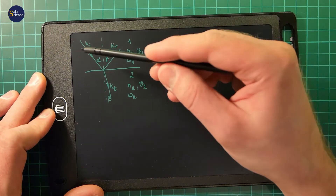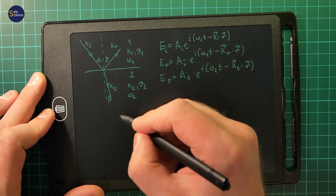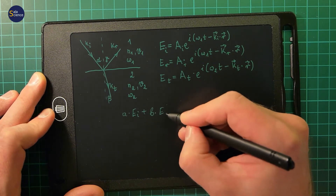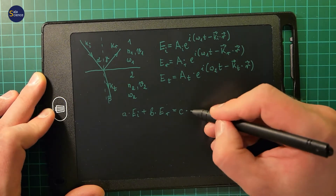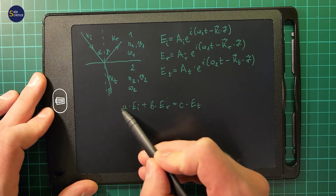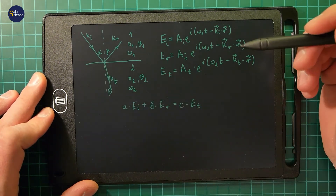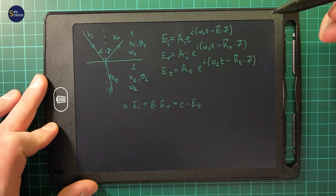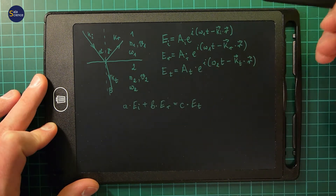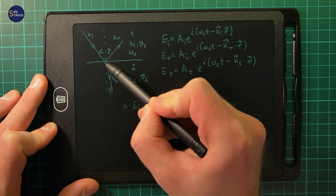No matter what is the direction of the electric field, no matter if the electric field is continuous across the boundary or it is not continuous, I can write that some a times Ei plus b times Er must be equal to some constant c times Et, with some parameters a, b, c. So the sum of the electric field in one medium at this point must be equal to the electric field in the second medium. This is sometimes confusing for students because they are thinking in terms of energy. Of course, the energy of the incident beam must equal the sum of the energy of the reflected and transmitted beams. But when it comes to the electric field, the electric field in the first medium must equal the electric field in the second medium at this point with some coefficients.